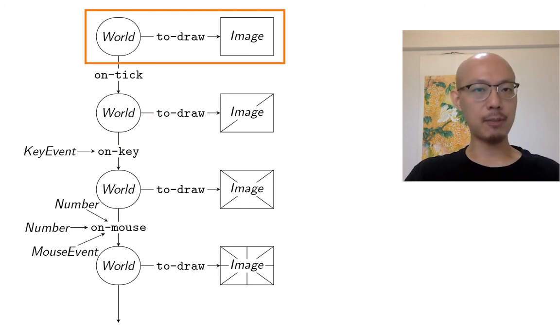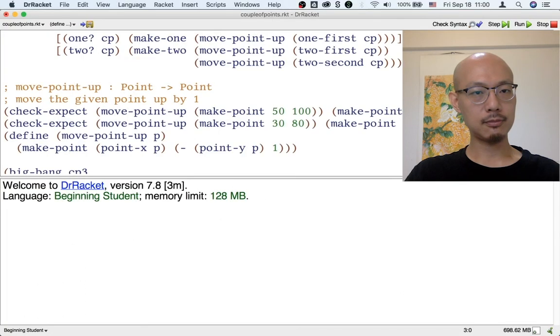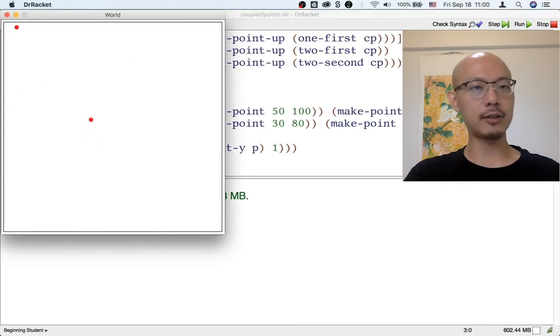Again, the only function that returns the image in the big bang is the draw function. Again, the points are now moving up.